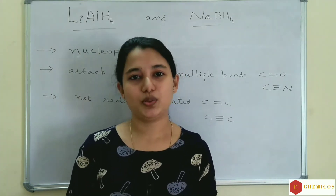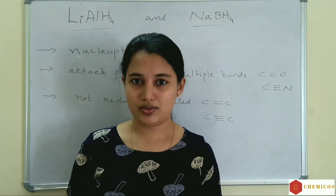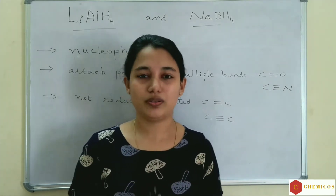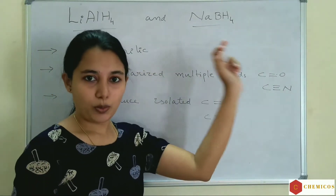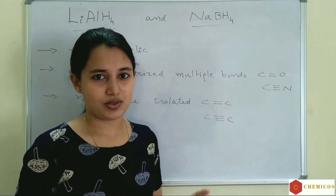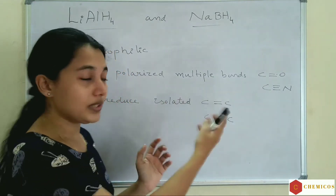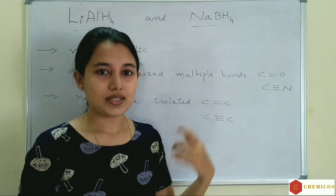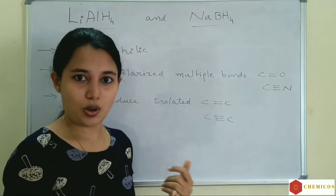What are the important reducing agents, how they reduce compounds, and which type of compounds are reduced by these reducing agents? In this video we are talking about the first two main important reducing agents: lithium aluminum hydride and sodium borohydride. These two have almost the same applications but they are a little bit different. Sodium borohydride is more useful because it is more chemoselective.